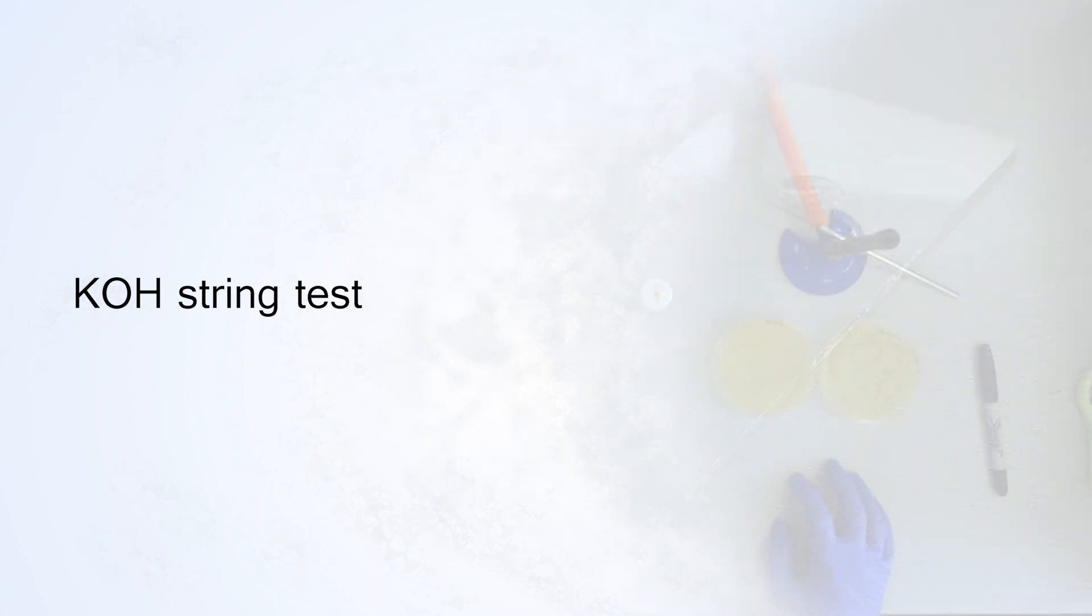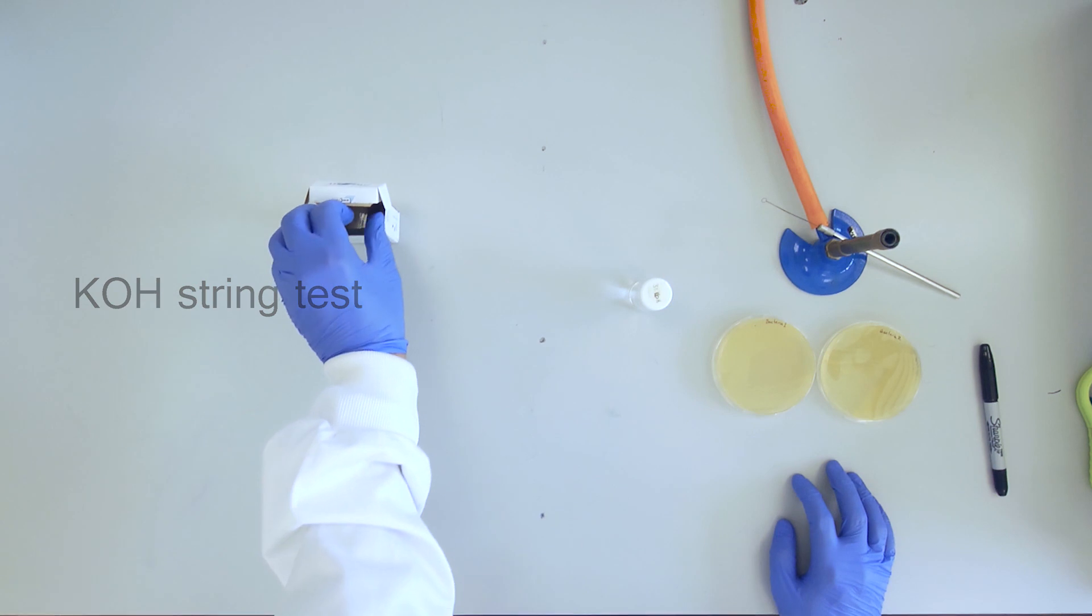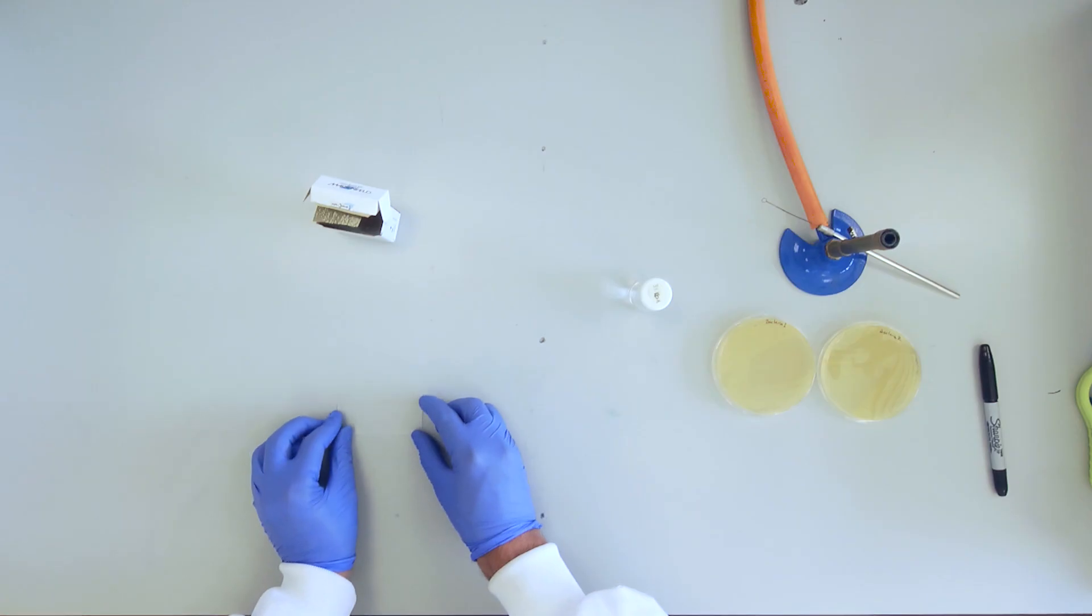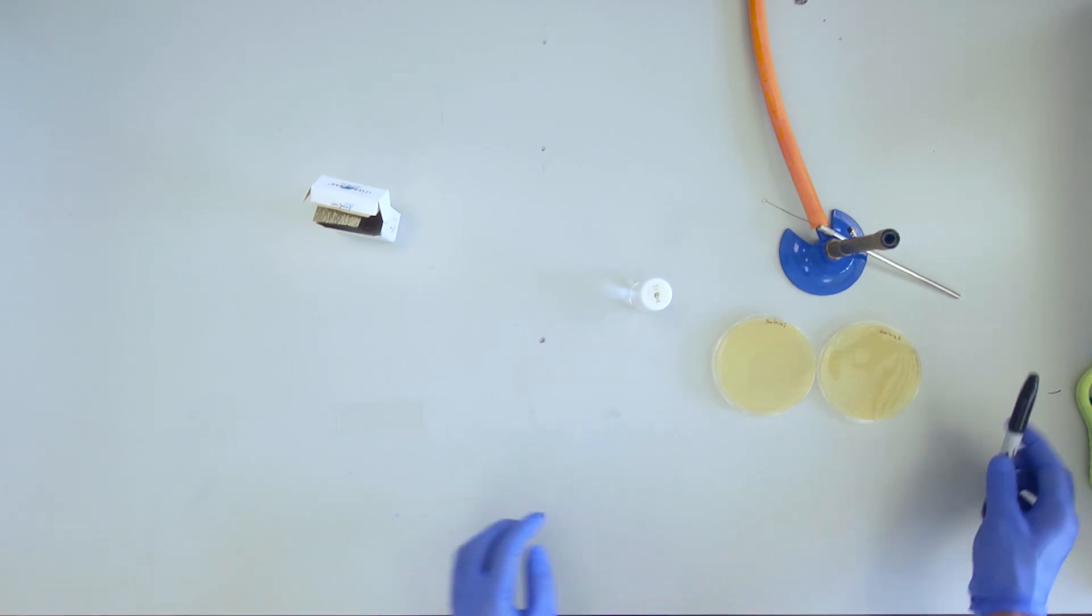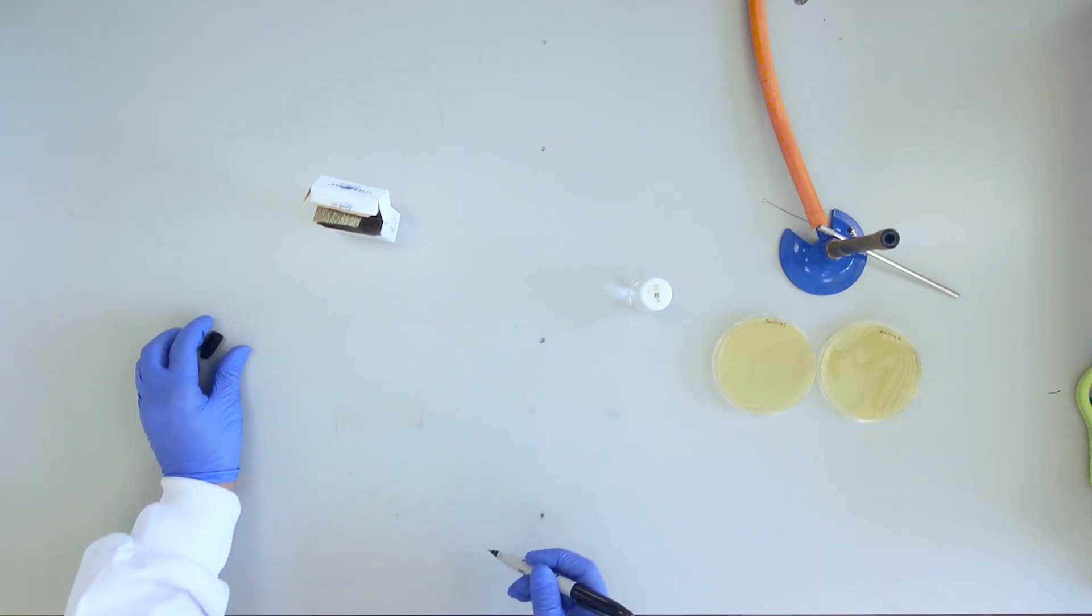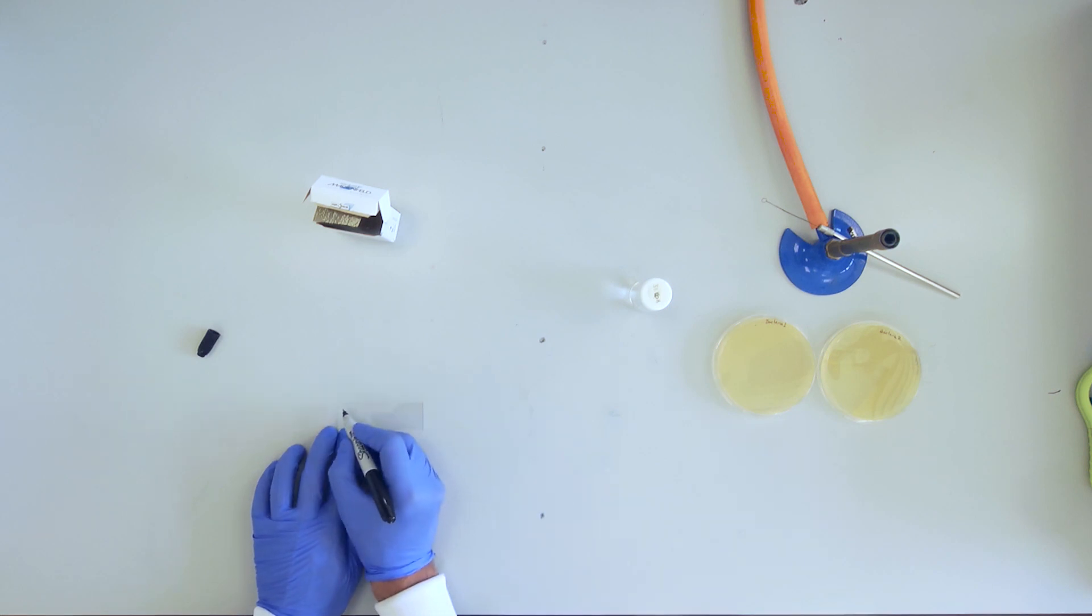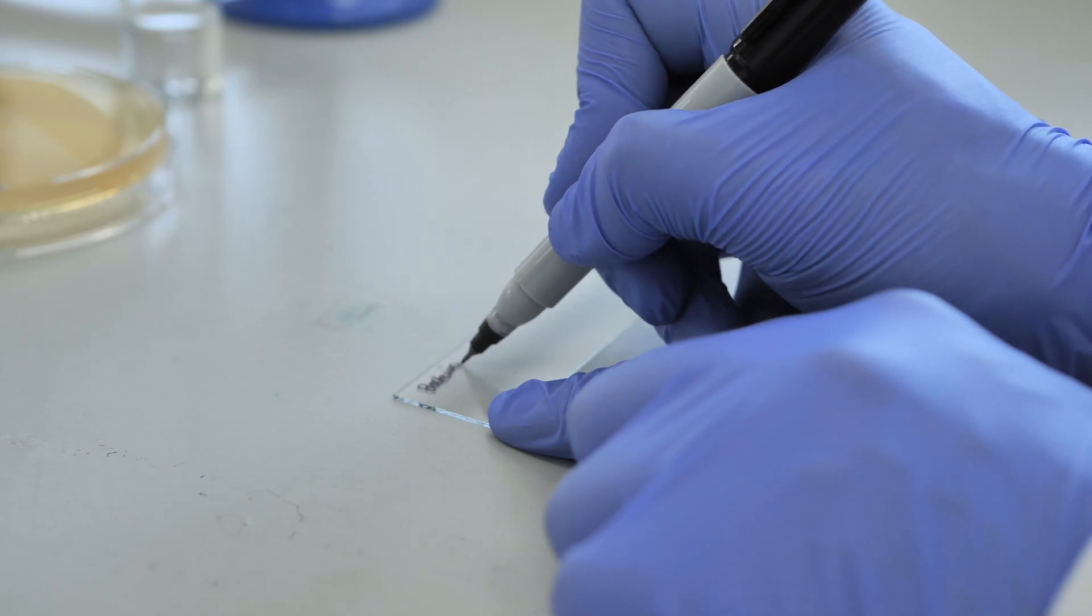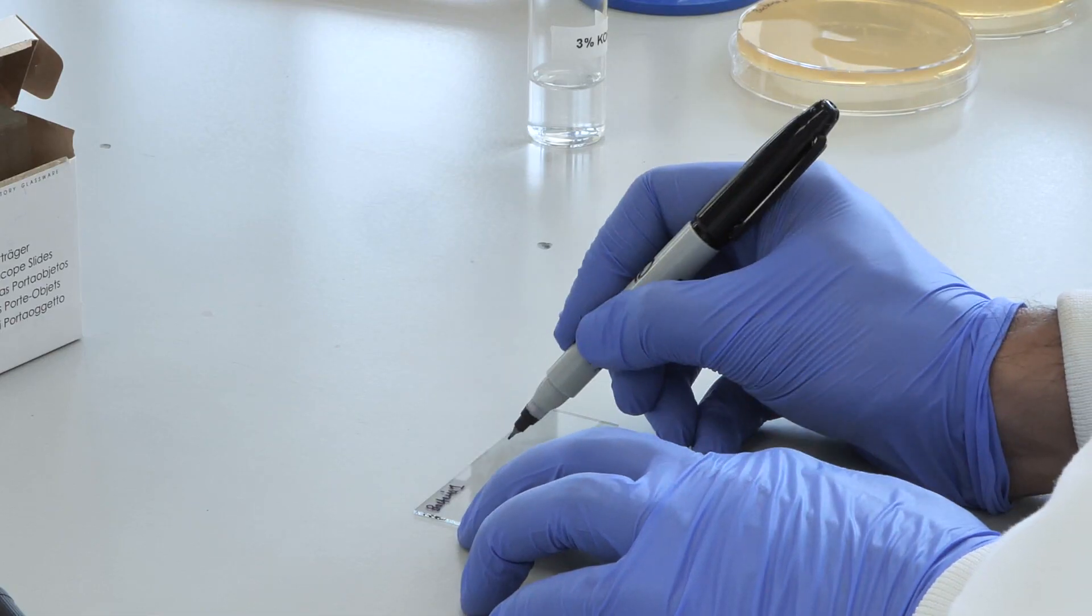KOH String Test. Label a slide with Bacteria 1 and Bacteria 2.